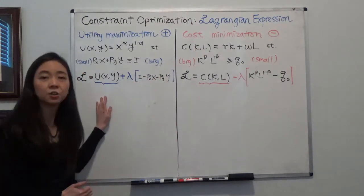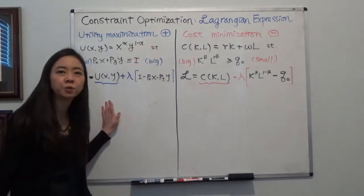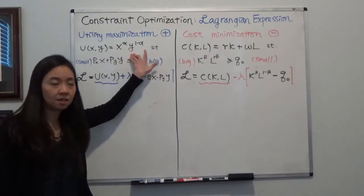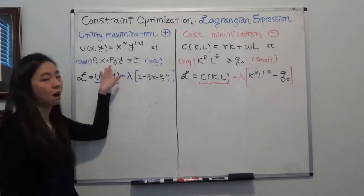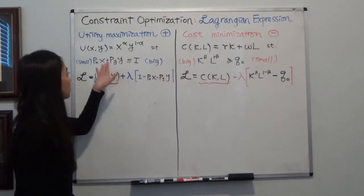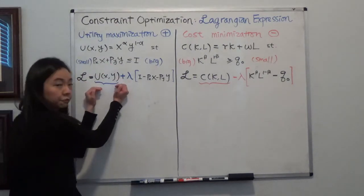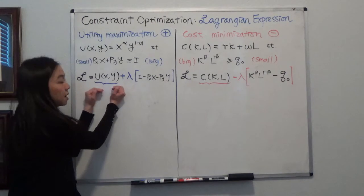Let's first take a look at the example of utility maximization. So we're trying to maximize our utility. This is a Cobb-Douglas utility, subject to our budget constraint. When you set up Lagrangian, you put utility function in front, that's the thing you're trying to optimize,